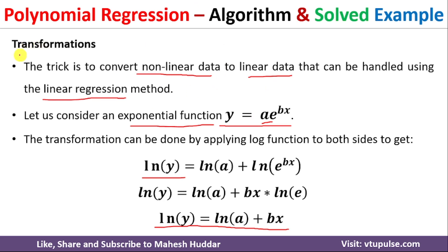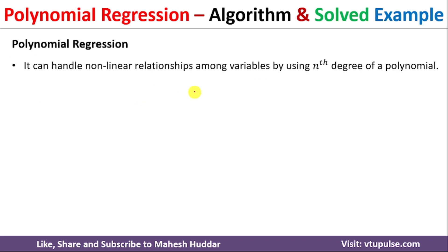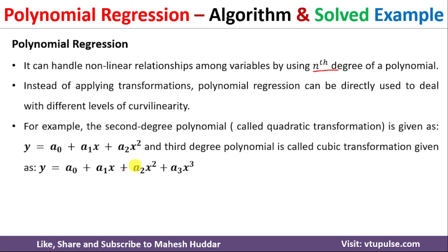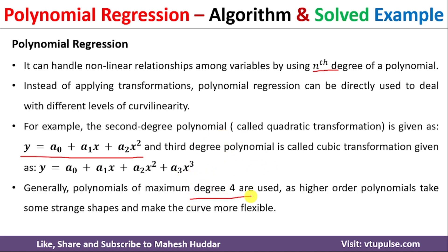This is the process for the first method — transforming nonlinear data into linear data and then applying the linear regression method. In the polynomial regression method, we handle the nonlinear relationship using polynomial functions of any degree. If the nonlinear data is of second degree, y = a0 + a1x + a2x². For cubic (third degree), y = a0 + a1x + a2x² + a3x³, and so on up to fourth degree. Beyond degree 4, it becomes very difficult to visualize and the model will overfit the data.